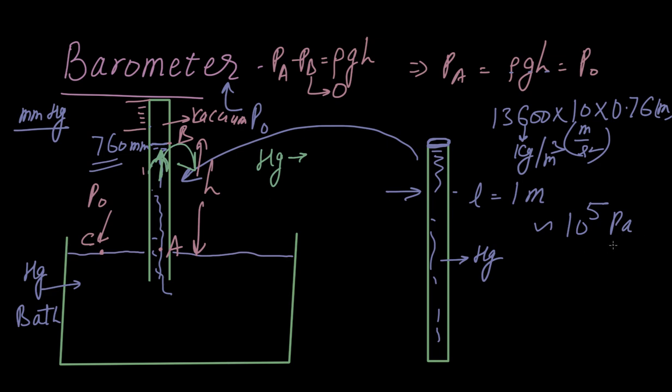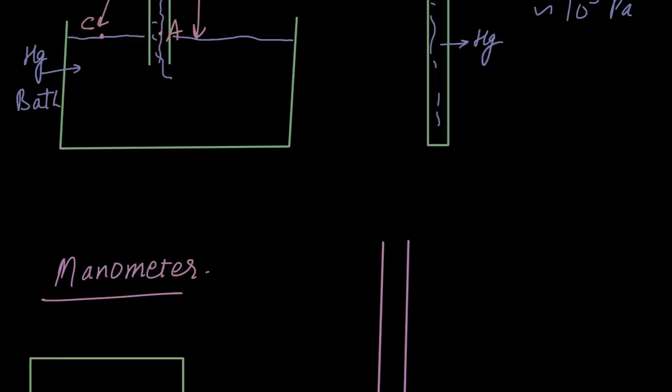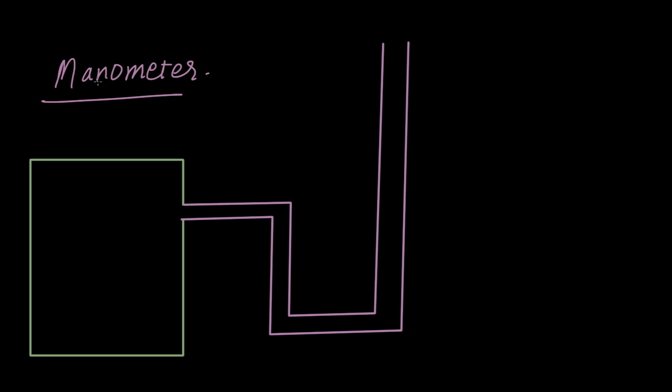Now let's come to the other measuring device that I was talking about. It's called a manometer. This is also one more pressure measuring device, which is used to measure the pressure of a gas contained inside a confinement or a container. As you can see, this is some gas inside this container.